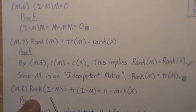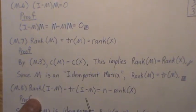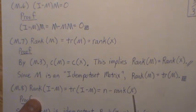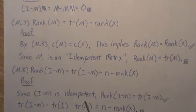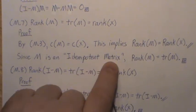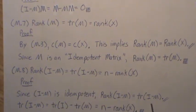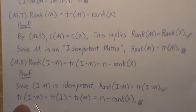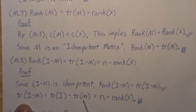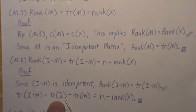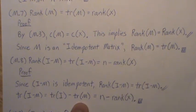Property 8: the rank of I minus M equals the trace of I minus M, which equals N minus the rank of X. Since I minus M is idempotent, rank equals trace. The trace of I minus M equals trace of I minus trace of M. The identity is diagonal so its trace is N, and the trace of M is rank(X) by property 7, giving N minus rank(X).